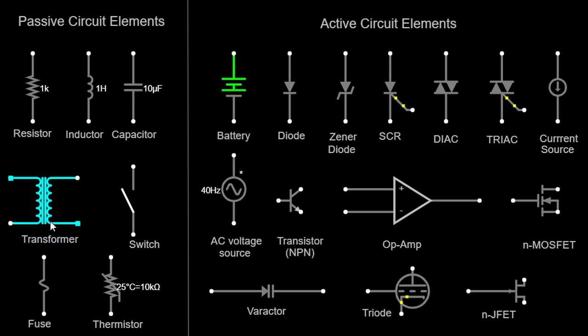Transformer. A transformer is a passive electrical device that transfers electrical energy between two or more circuits through electromagnetic induction. It consists of two or more coils of wire, windings, and is used to step up or step down voltage levels. Transformers are often represented by two coils with a shared magnetic core in circuit diagrams.